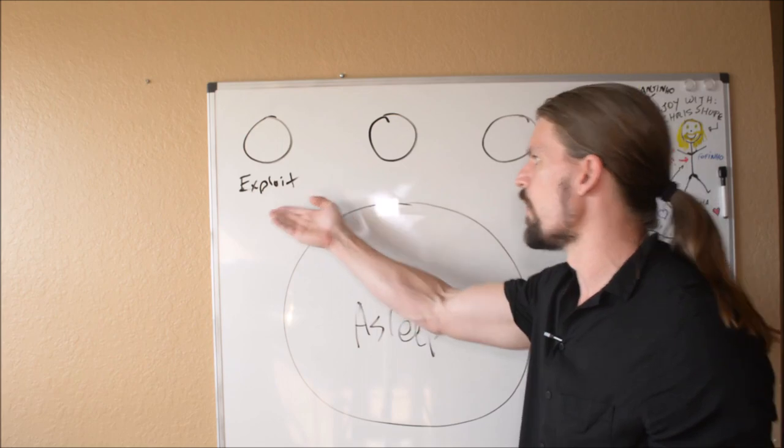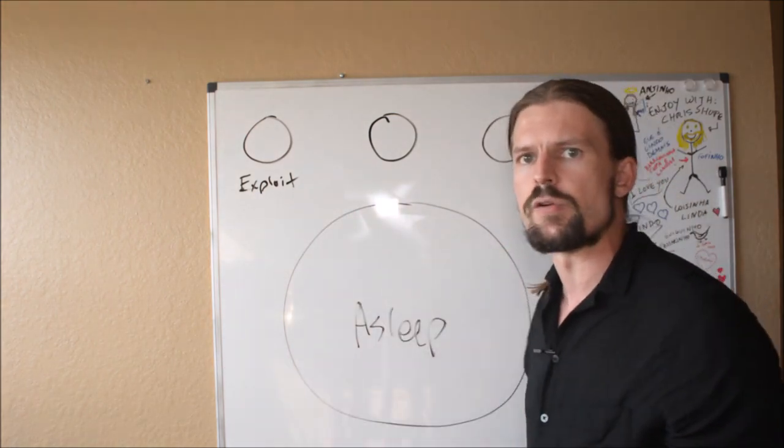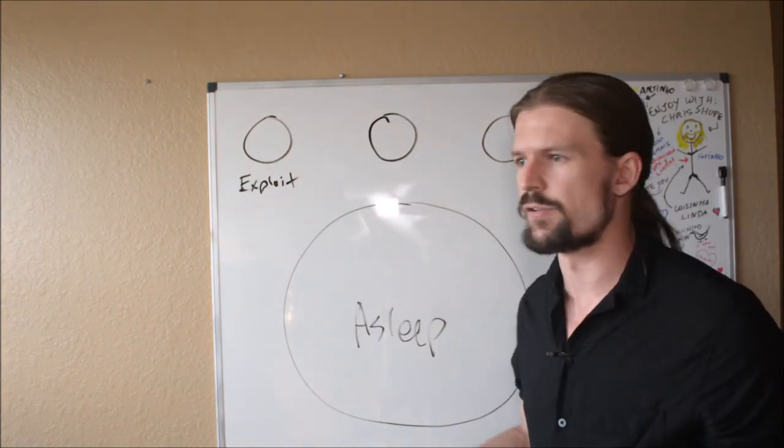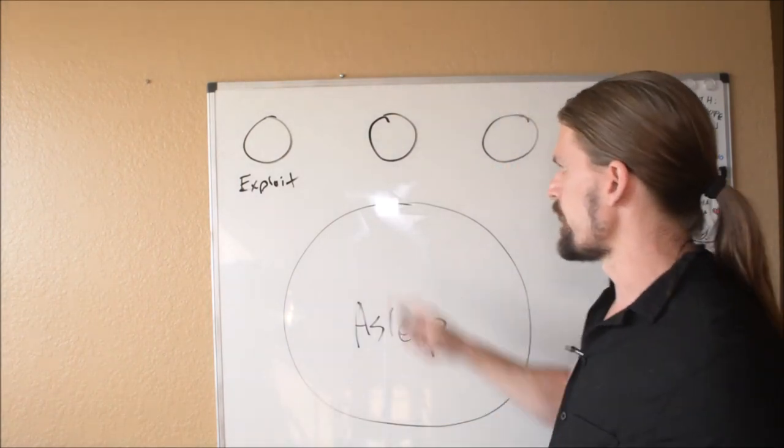So I'll call this the exploit category. These are people that know something more about the world and so they're going to use that knowledge to their advantage and use these people as their pawns to help them get money and power and physical pleasure.